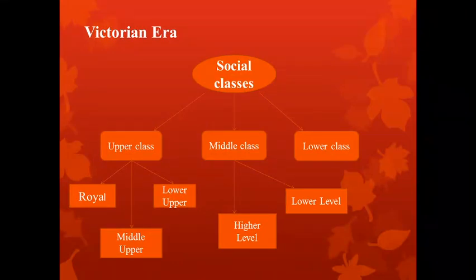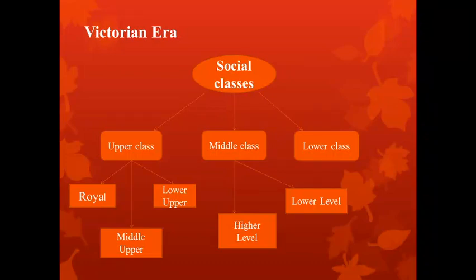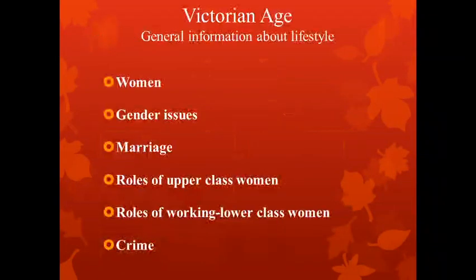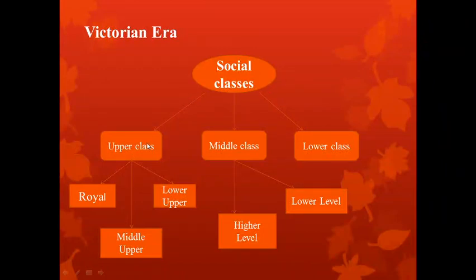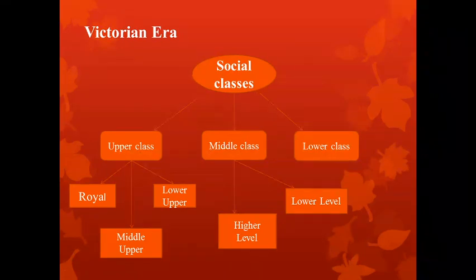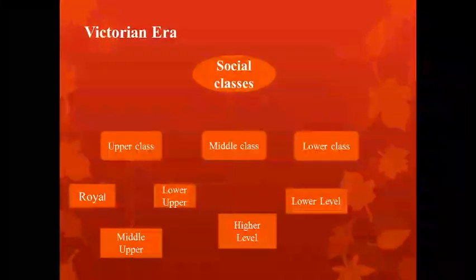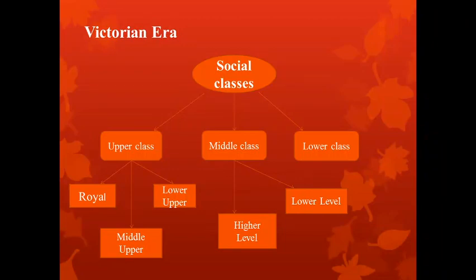First, you should know about social classes and the general view of the Victorian era. The Victorian era in Britain was dominated by the reign of Queen Victoria from 1837 to 1901. Although it was a peaceful and prosperous time, there were still issues within the social structure. The social classes included the upper class, middle class, and lower class. Those in the upper class did not usually perform manual labor; they were landowners or made investments. This class was divided into three subcategories — royal, middle upper, and lower upper.